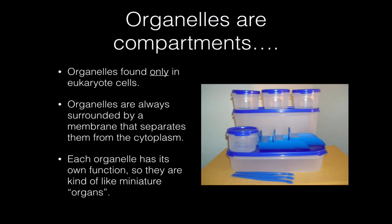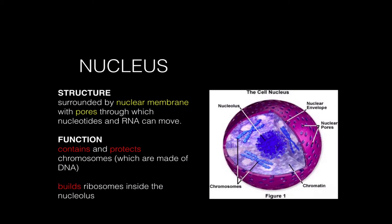Organelles — you probably have heard this word before. Organelles are another way of describing compartments and are only found in eukaryote cells; prokaryote cells do not have organelles. Organelles are always surrounded by a membrane that separates the inside of the organelle from the cytoplasm, and each organelle has its own function. That's why they've been named organelles, which kind of means 'tiny organ.' I found a picture of some Tupperware because I always think of plastic containers when I think of organelles — we use Tupperware to store things and keep them separate from something else.